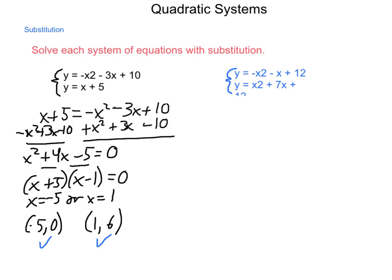Second, what happens when we have a quadratic and quadratic system? Substitution is really going to be one of the best ways of doing this. Now we can use elimination by adding these together, but let's use substitution because that is going to be much more common. We would have x squared plus 7x plus 12 equals negative x squared minus x plus 12.